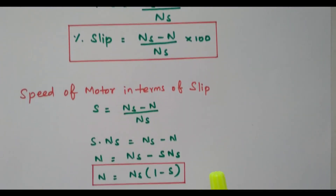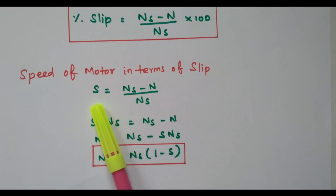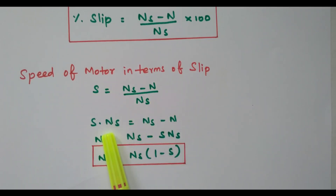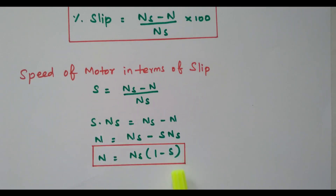Now we will see the speed of the motor expressed in terms of slip. We know that s = (Ns minus N) / Ns. Cross-multiplying: s·Ns = Ns minus N. Bringing N to the left and s·Ns to the right gives n = Ns(1 minus s). So the speed of the motor in terms of synchronous speed and slip is n = Ns(1 − s).